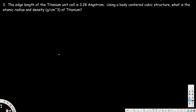Let's look at this problem. The question states that the edge length of the titanium unit cell is 3.28 angstrom, using a body-centered cubic structure. What is the atomic radius and density in grams per centimeter cubed of titanium? The question is asking for both the atomic radius and the density. Before we solve, we need to understand the structure of a body-centered cubic structure.